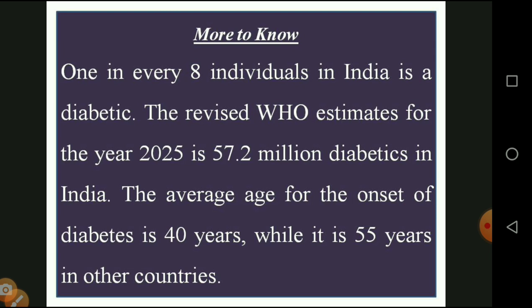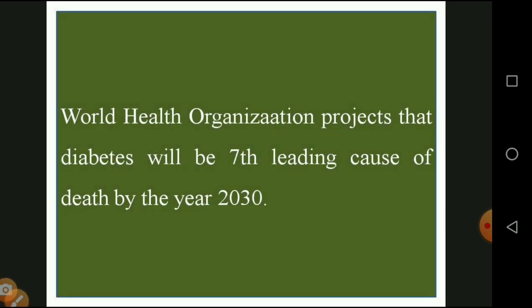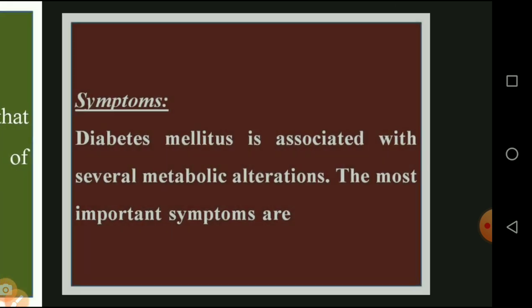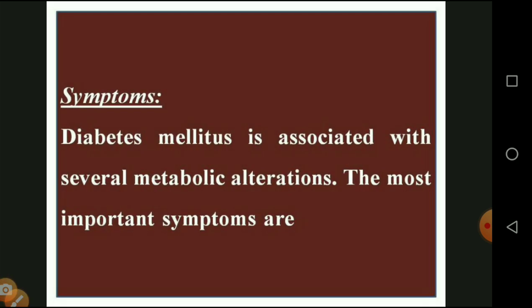The WHO estimates that by 2025, there will be 57.2 million diabetics in India. The average age of diabetes onset in India is 40 years, compared to 55 years in other countries. The WHO projects that diabetes will be the seventh leading cause of death by 2030. Diabetes mellitus is associated with several metabolic alterations.